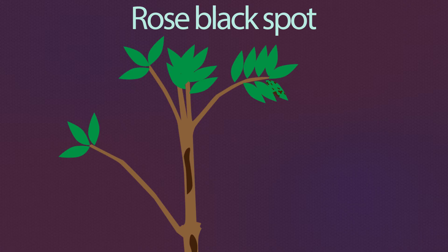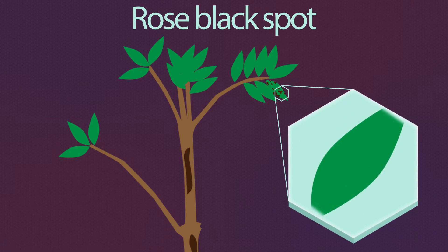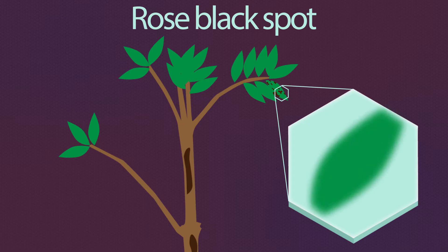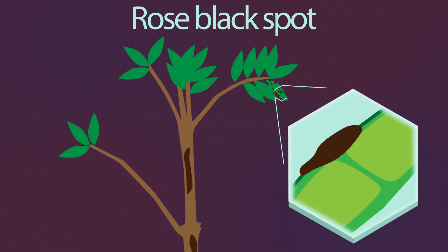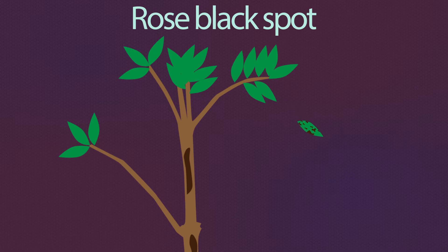In rose black spot, the fungi infects the leaves of the rose bush, causing large black spots on the upper leaf surface. This reduces the ability of the infected leaves to carry out photosynthesis, and the infected leaves fall from the plant. The rose plant does not grow as well and may die.